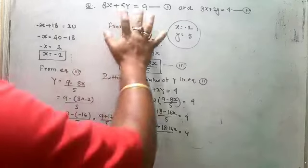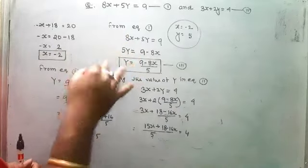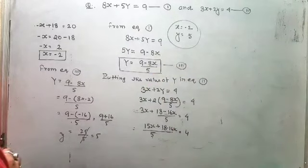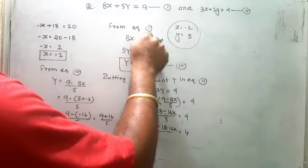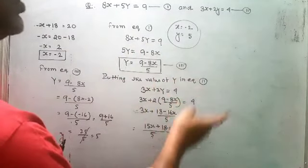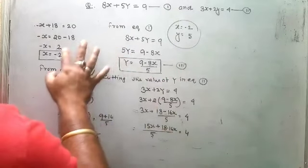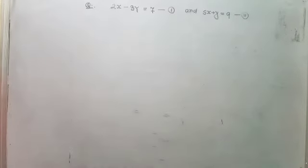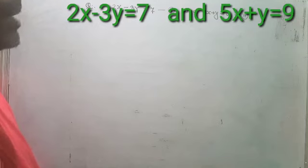To summarize: from any equation one or two, find the value of x in terms of y or y in terms of x — that is equation three. Then put the value in the other equation. If you find y from equation one, put the value in equation two; if you find y from equation two, put the value in equation one — just the opposite. Then find the other variable using equation three.